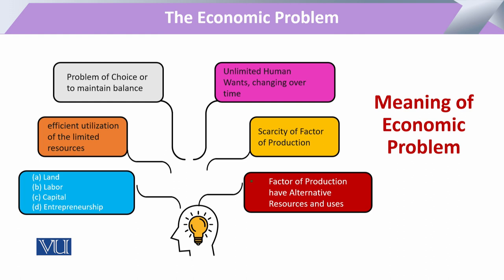तो problem of choice है — वो scarcity और multiple ends के दर्मियान decision का नाम है जिसको maintain और balance करना ही हमें deal करना है। और in factors of production को जब हमने देखना है तो हमें ये भी देखना है कि जो human wants हैं — जिसके बारे में हम कहते हैं कि resources scarce हैं — जो human wants हैं वो unlimited हैं।